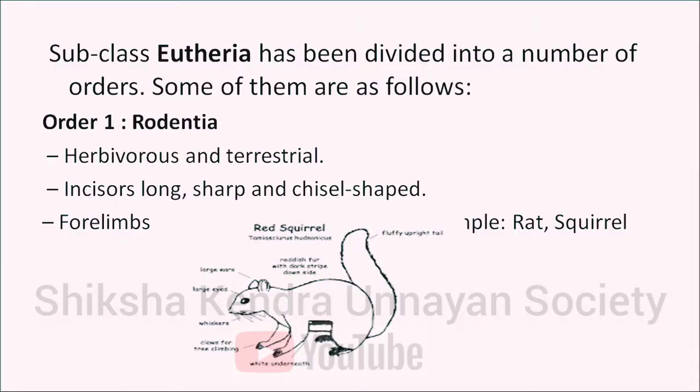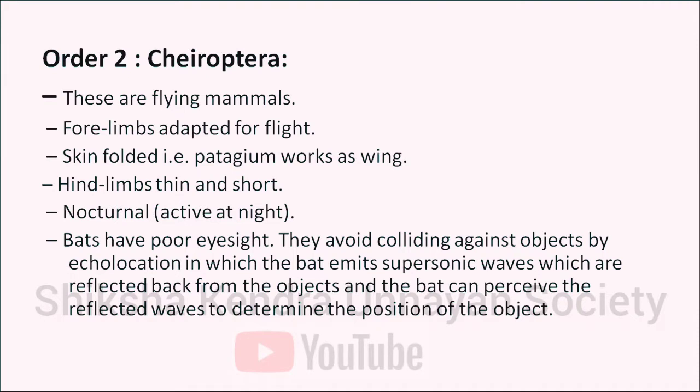Subclass Eutheria is divided into further orders. The first order is Rodentia — herbivorous and terrestrial animals with long, sharp, chisel-shaped incisors. Forelimbs are shorter than hind limbs. Example: rat and squirrel. The second order is Chiroptera — flying animals whose forelimbs are adapted for flight; the skin is folded as a patagium that works as wings; hind limbs are thin and short. They are nocturnal (active at night). Bats have very poor eyesight and avoid colliding with objects by echolocation, emitting supersonic waves reflected back from objects, functioning similar to radar.